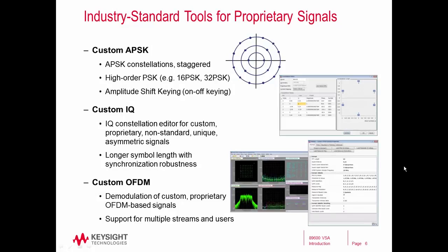For those using proprietary or non-standard signals, the 89600 VSA software offers several flexible customizable demodulators. We have a custom APSK option, which allows you to define the number of rings for your constellation and the constellation points on those rings — useful for higher-order PSK constellations or on-off keying, and used by several customers for satellite signals. We also have a custom IQ option with further flexibility for asymmetric or unique constellations. We have a custom OFDM option that enables you to define your OFDM signal, all of the subcarriers, modulation formats, pilots, preambles, and also supports MIMO configurations and multiple users.